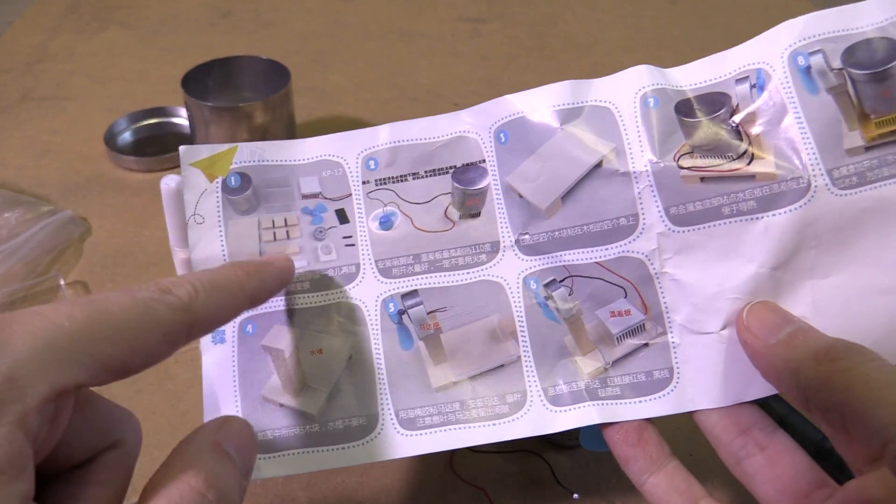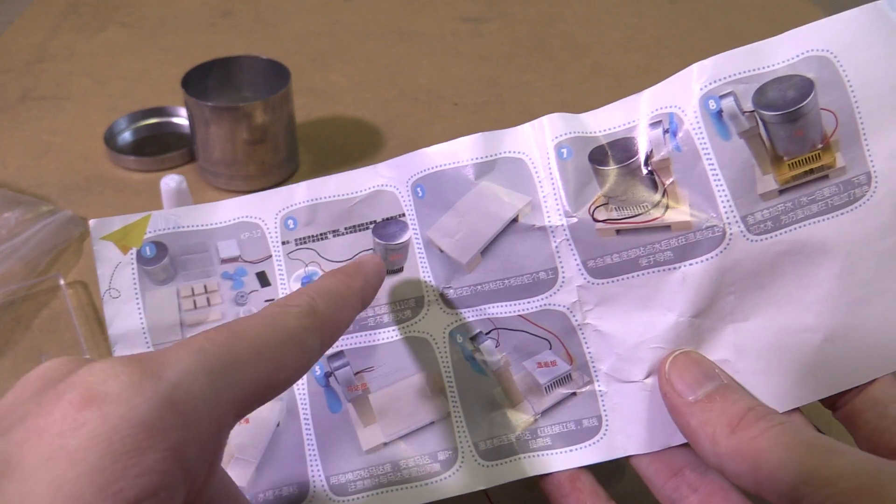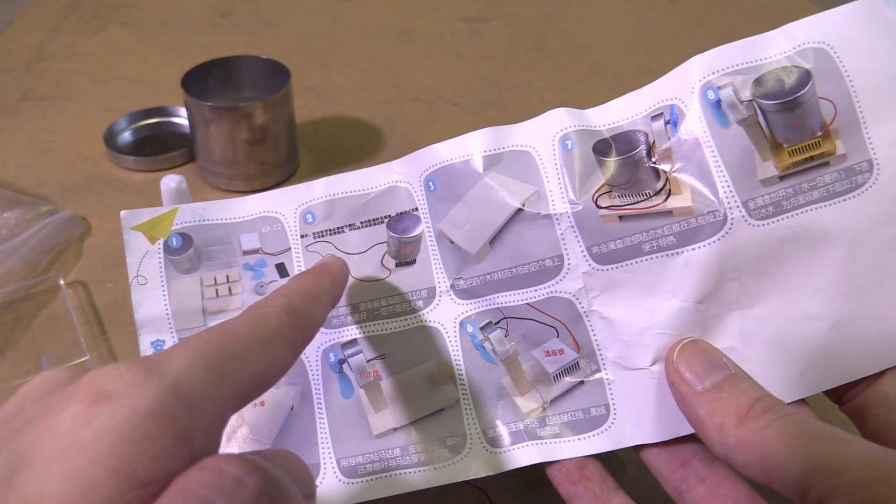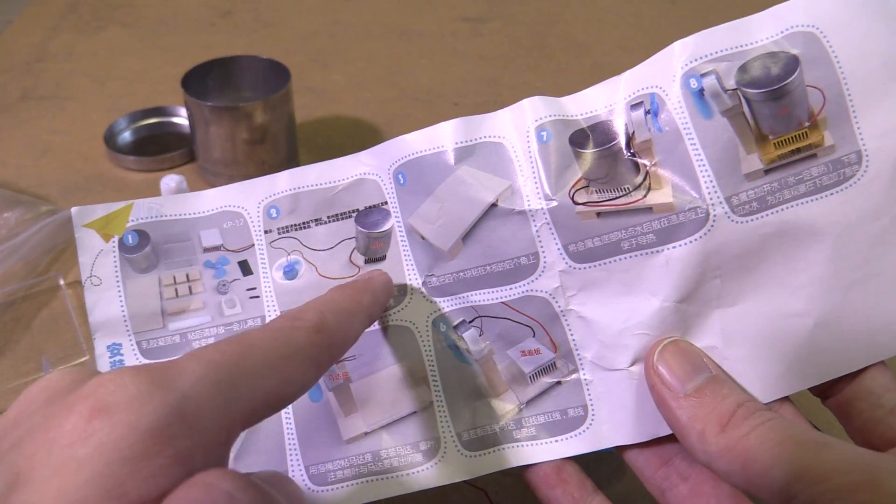So it looks like part one is to take all the parts out and lay them on the table. And part two is to solder the wires between the motor and the Peltier module. So we'll do that now.